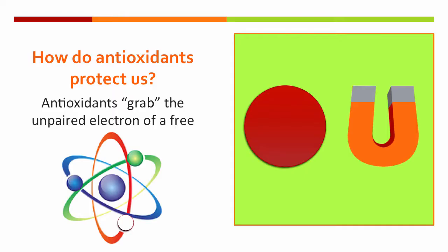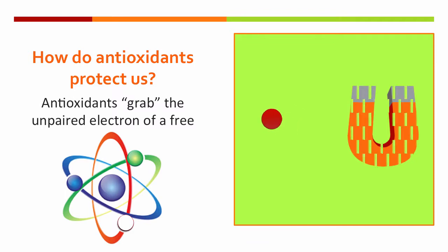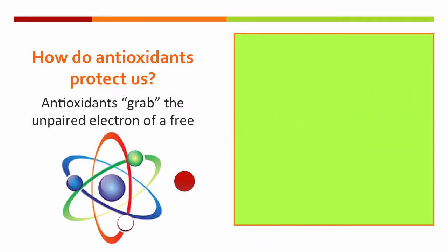So how do antioxidants protect us? Antioxidants play the role of an electron acceptor. It takes the unpaired electron from a free radical to neutralize the atom. This eliminates the magnetic-like pull from the free radical and helps stop the cascading effects.